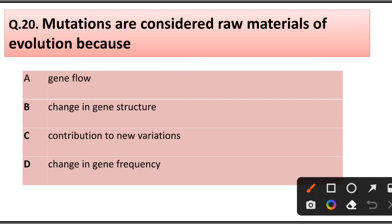Question number 20. Mutations are considered the raw material of evolution because of: gene flow, gene structure, contribution to new variation, or change in gene frequency. Answer is option C: Contribute to new variation.